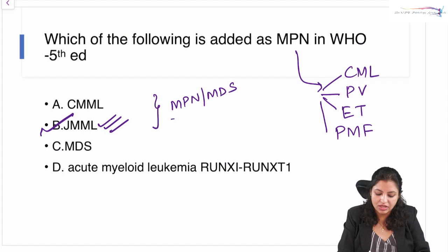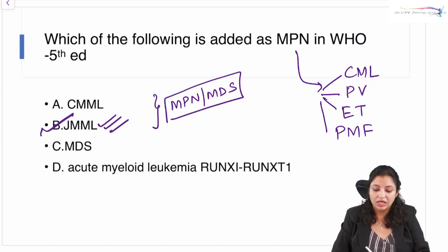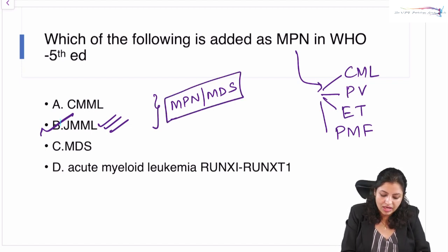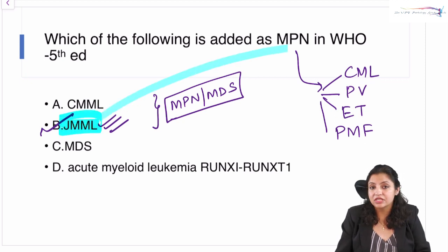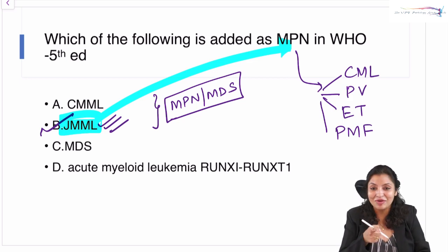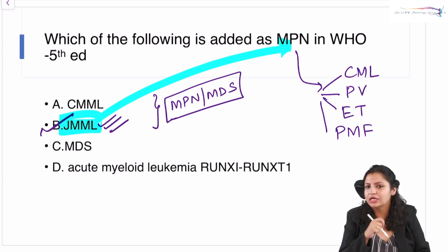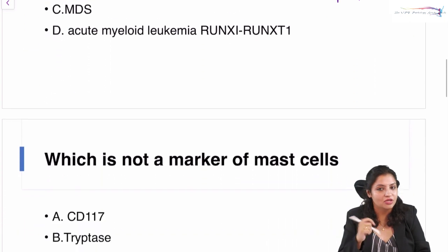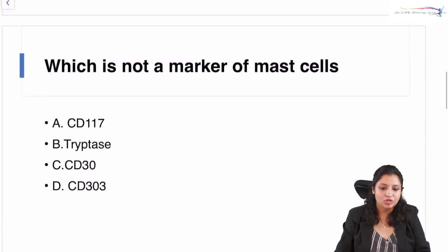Now JMML has been removed from that MPN/MDS hybrid category and added as a pure MPN. This is the first and most important update in the myeloid classification that you should remember. From now, JMML is classified as a myeloproliferative neoplasm — a very important and high-yield question that can be asked in your exams.